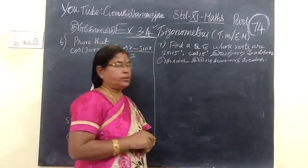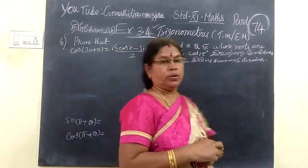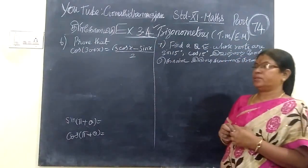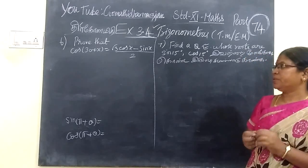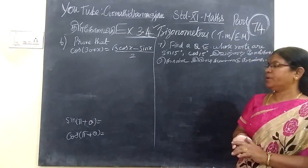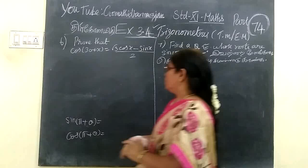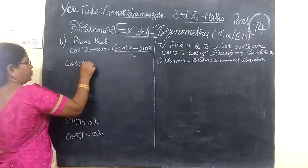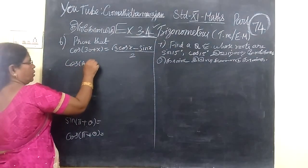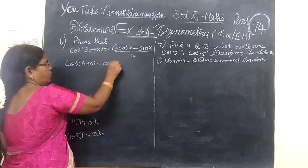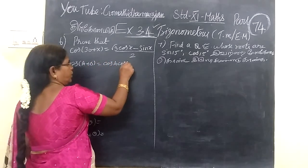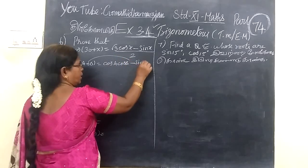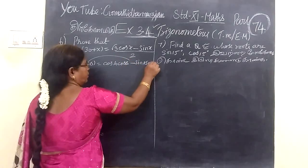Now we want to see cos 34. This is question number 3: root 8 cos of (30 plus x) equals root 3 cos minus times by 2. For this we are using the formula cos of A plus B. Cos of A plus B equals cos A cos B minus sin A sin B.